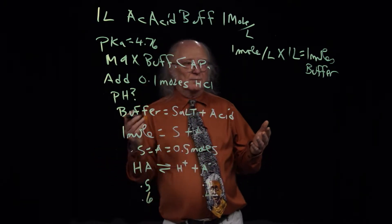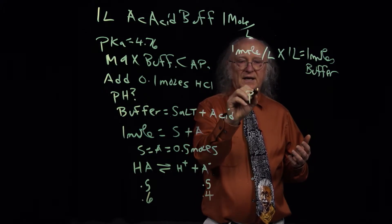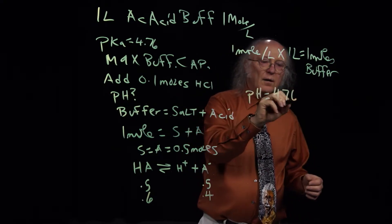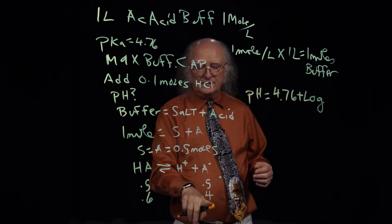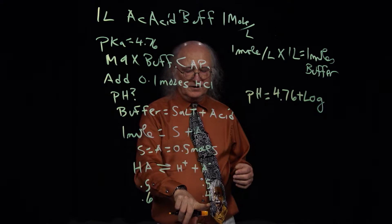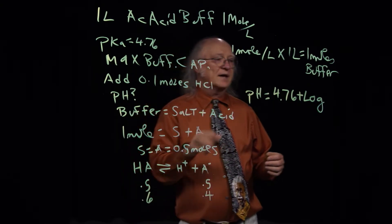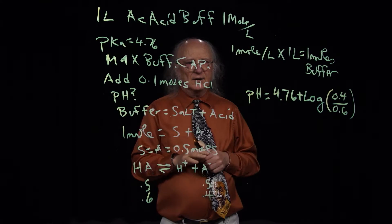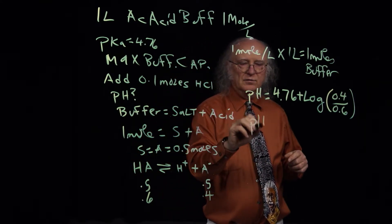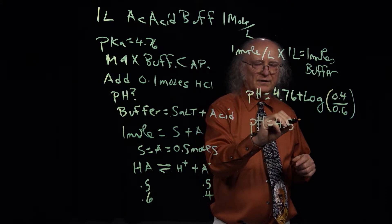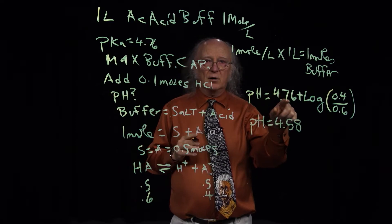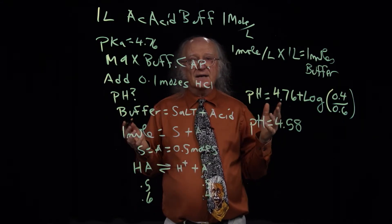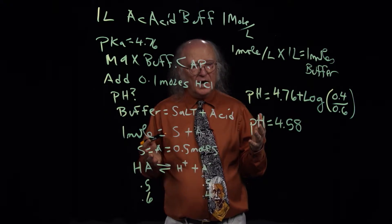Using Henderson-Hasselbalch, pH equals the pKa of 4.76 plus the log of the new quantities of salt and acid — salt being 0.4 and acid being 0.6. Punching it into a calculator, the pH is equal to 4.58. You can see the pH changed only marginally, going from 4.76 to 4.58, despite adding 0.1 moles of protons.